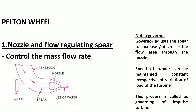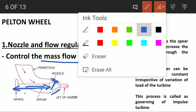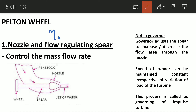Coming to the nozzle and the flow regulating spear: a spear is placed at the tip of the nozzle. By moving the spear, you can control the flow through the nozzle — this is the spear adjustment for flow control.